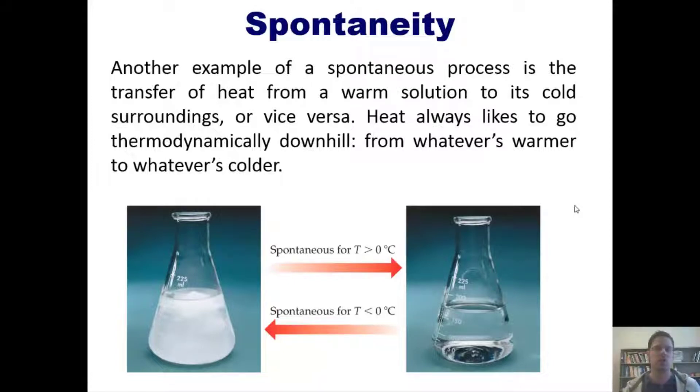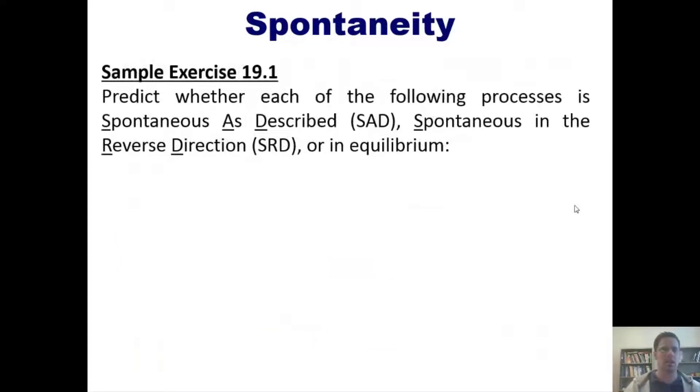However, if you turn off the heat source, the heat inside your home will spontaneously dissipate, seeping through the walls and cracks of your home to the outside until the temperature inside equals the temperature outside. Once again, heat always likes to dissipate or go thermodynamically downhill. That is spontaneous and the reverse of it would be non-spontaneous.